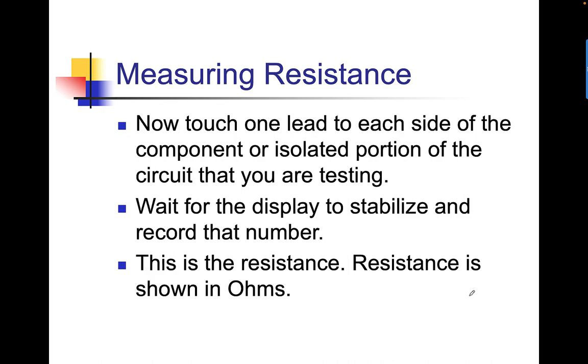Always test your leads when you're doing resistance readings. Now, touch one lead to each side of the component or the isolated portion of the circuit you're testing. Wait for the display to stabilize and record that number — that is the resistance. Resistance is always shown in ohms. Occasionally you'll see the Greek omega symbol — that's the measurement of resistance.